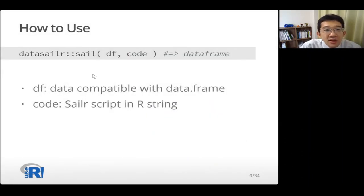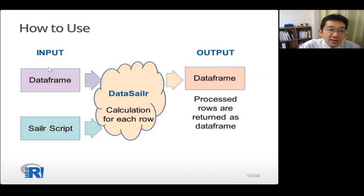How to use? Data Sailr has a sailr function. We can pass DataFrame and Sailr script to this function. df can accept data compatible with DataFrame. Code accepts Sailr script in R string. So passing this DataFrame and Sailr script, this function returns DataFrame processed. So this is an image: passing DataFrame, passing Sailr script, Data Sailr calculates for each row, and outputs the result DataFrame.